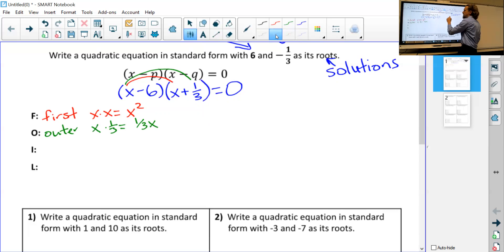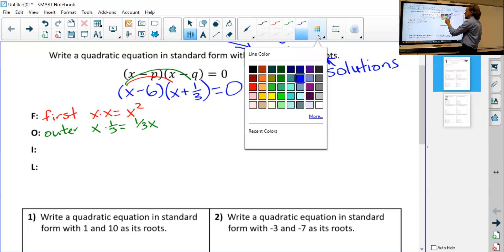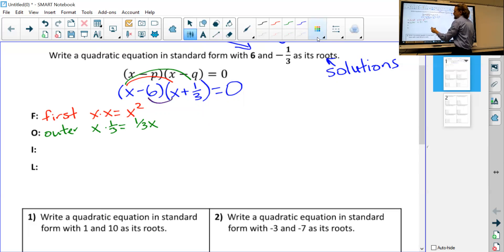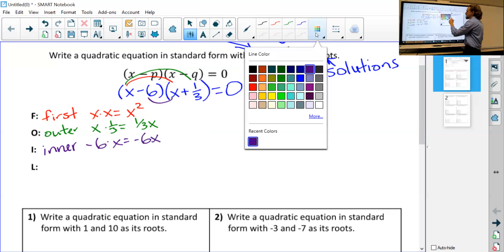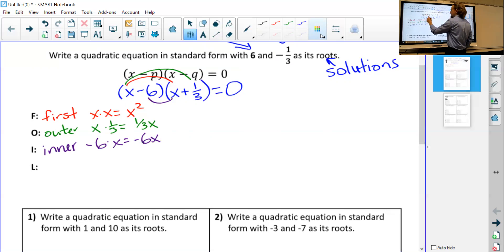Then we have, now we already use O. Now I use O, so let's pick some different colors. Let's go purple. Then we have our inner term. That's our I. So negative six times X is just negative six X. And then let's go Texas orange. Our last terms. Oops. I knew I would do that last. So that's negative six times one third. And one third of six is two. So it's going to be negative two.